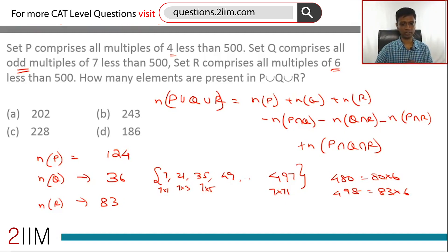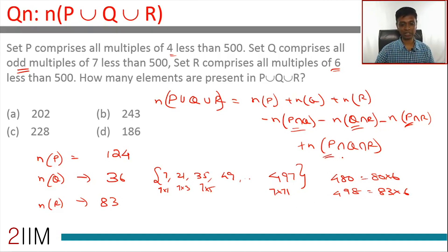So P has 124 elements, Q has 36 elements, R has 83 elements. This much we have computed. Now we need to go to P∩Q, Q∩R, P∩R, and then P∩Q∩R.